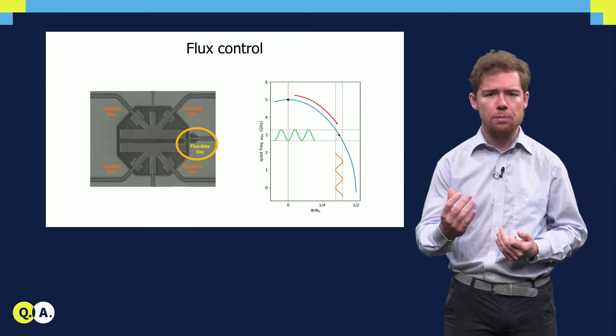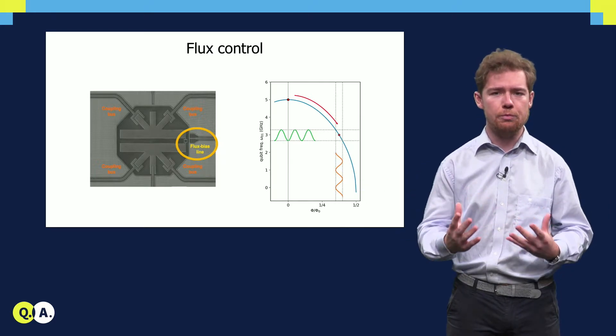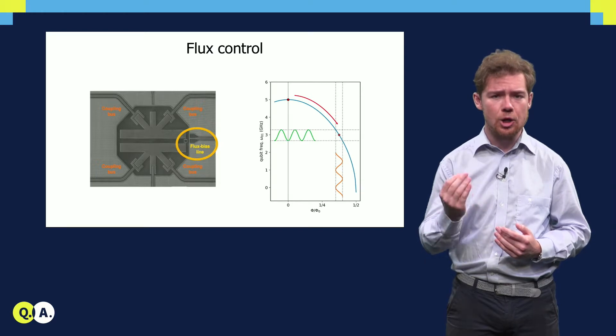When a pulse is applied to the flux bias line, the qubit is detuned from its operating frequency for the duration of the pulse. While the qubit is detuned, phase accumulates.